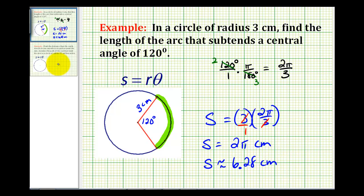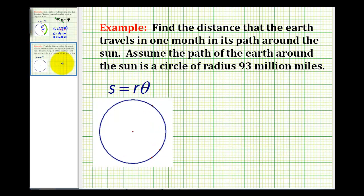Now let's take a look at an application problem. Find the distance that the earth travels in one month in its path around the sun. Assume the path of the earth around the sun is a circle of radius 93 million miles.